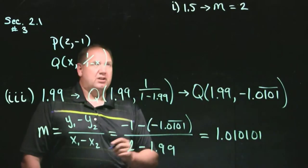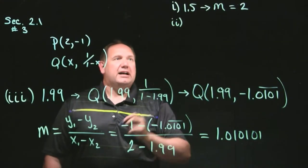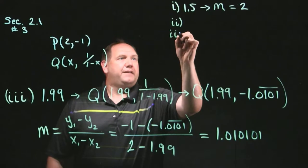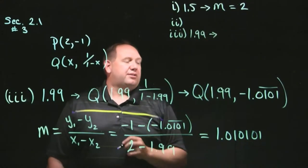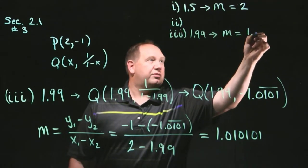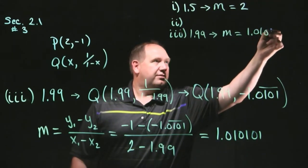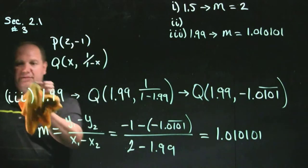Okay? So again, you have to figure out what double i is, but this is triple i. So this is 1.99, and that corresponds to 6 decimal places, m being 1.010101. Okay? Let me erase this.